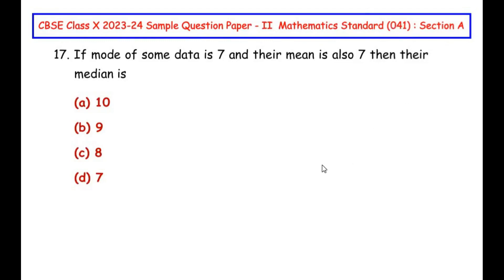Section A which is multiple choice questions where each question is one mark. This question is from the statistics chapter. If mode of some data is 7 and their mean is also 7, then their median is.